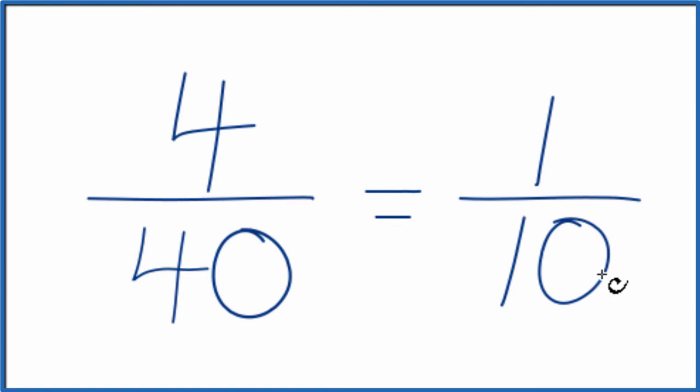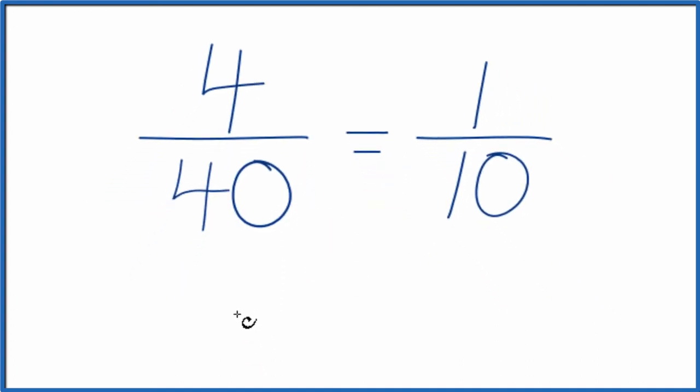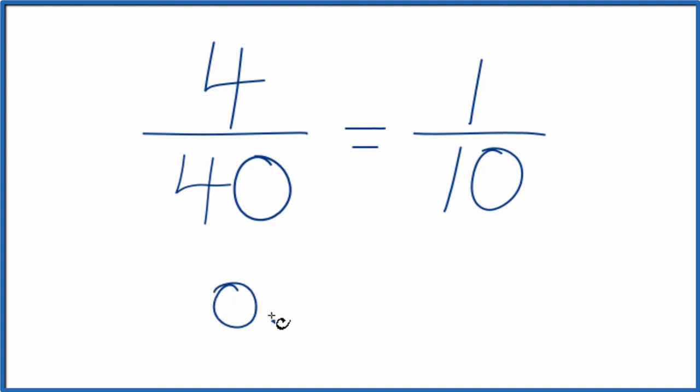And these are equivalent fractions. They have the same value. It's just 1 tenth, reduced from 4 over 40. If we divided 4 by 40, we would get 0.1. If we divided 1 by 10, we'd get 0.1.